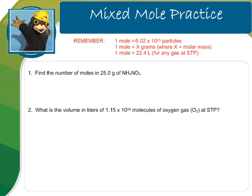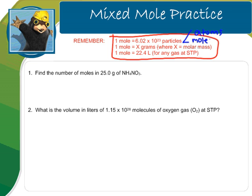Let's actually do a couple of these problems. They may look complicated, but if you know your conversion factors, it makes this very easy. Remember: 1 mole equals 6.02 times 10 to the 23rd particles — your particles are atoms, molecules, and formula units. Your second conversion factor is that 1 mole equals x grams, where x is the molar mass — you look on your periodic table to find that. And the easiest one: 1 mole equals 22.4 liters. I'm going to use a combination of these to solve the problems.